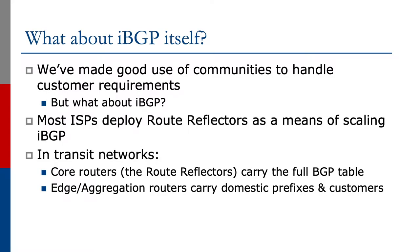So what about IBGP itself — how do you scale IBGP? We've made good use of communities to handle customer requirements. To scale IBGP, most of the time you're going to have a route reflector, and this will scale your IBGP mesh. In transit networks, your core routers — the route reflectors — will carry the full BGP tables, but the edge and aggregation routers will only carry domestic prefixes and customer prefixes which are local to that router.